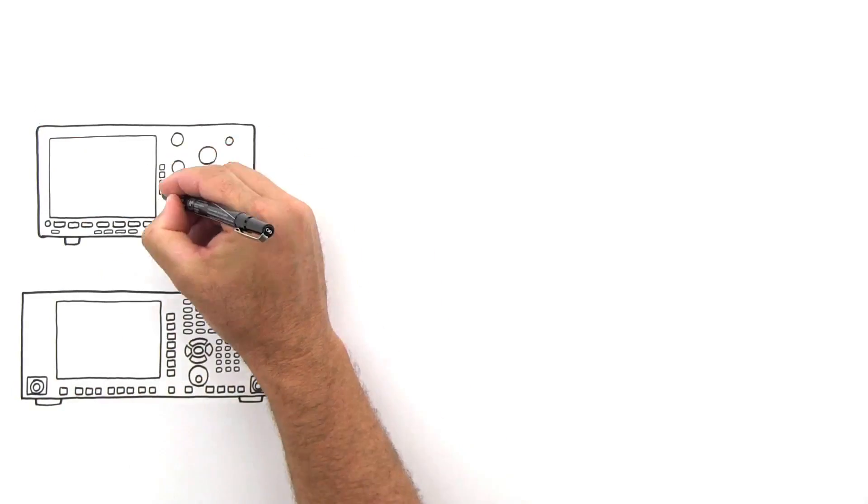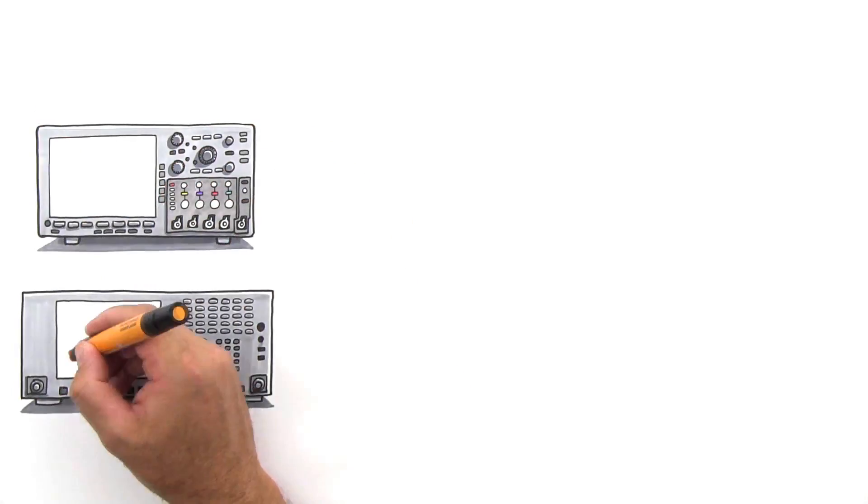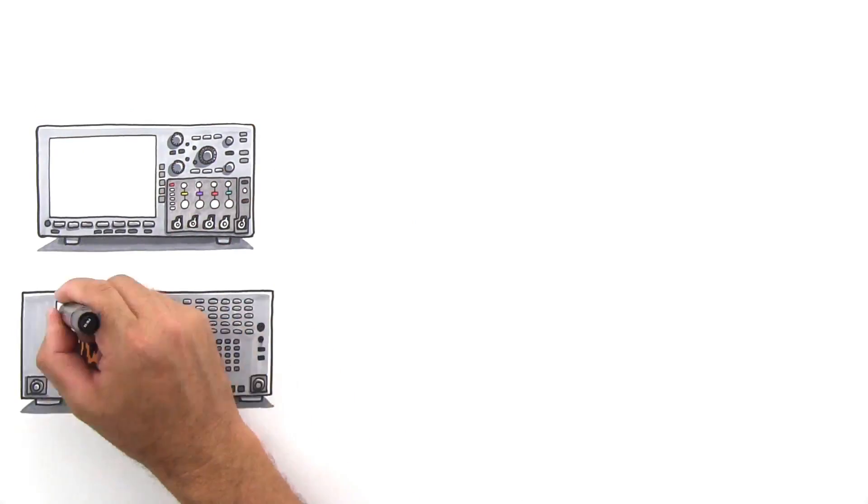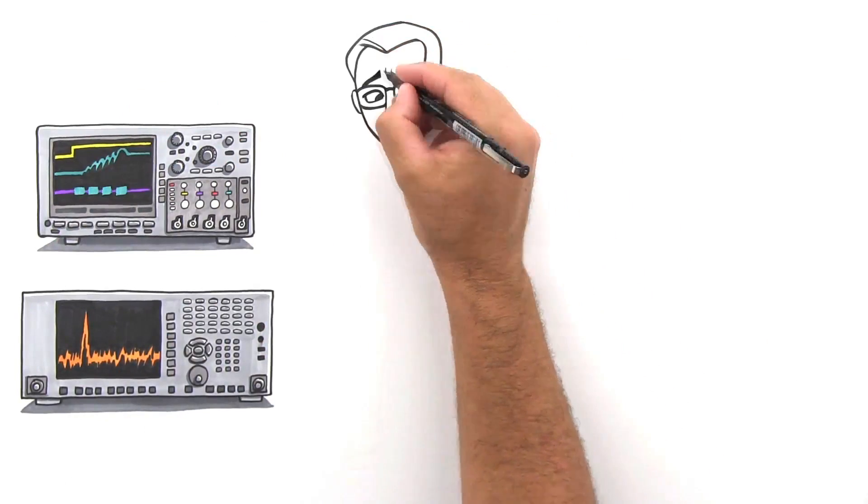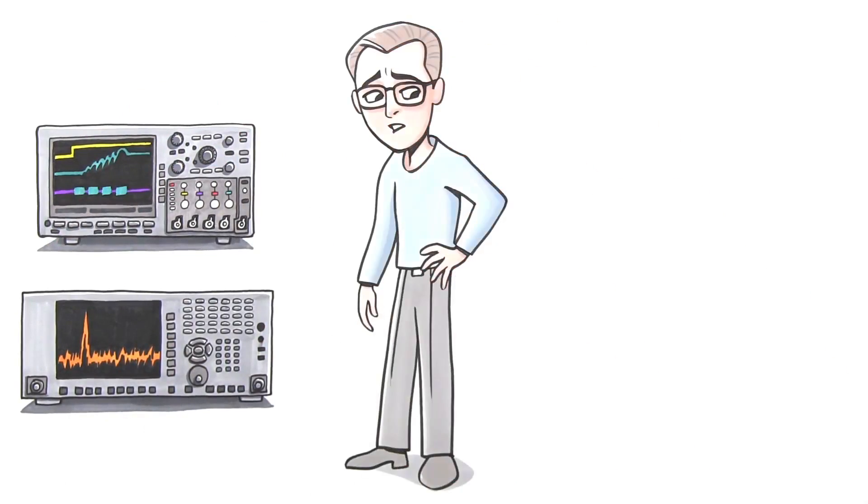Ever feel like your current test setup doesn't tell the whole story? Sure, you can see your spectrum with this tool and your analog and digital signals with that one, but wouldn't you like to see everything your wireless system is doing at a glance?